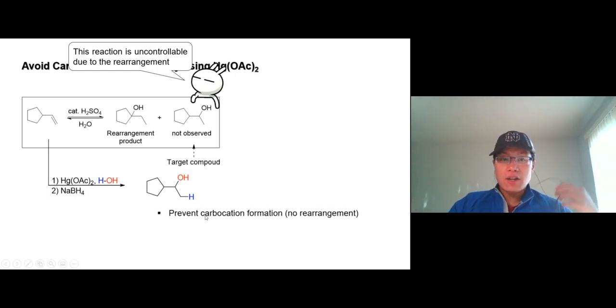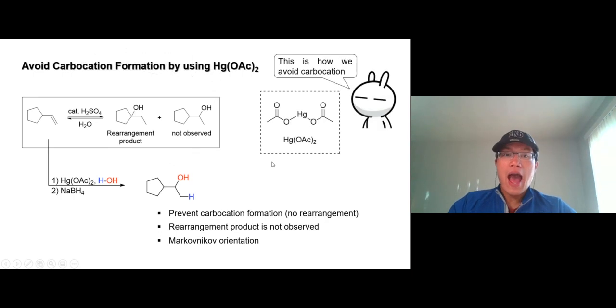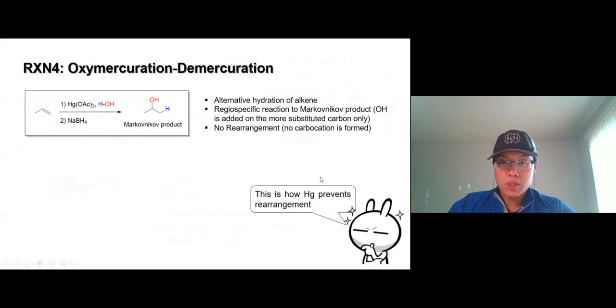The upside of using these reagents, the downside, of course, is they contain mercury, and mercury is toxic. We don't really like that. But the upside is it prevents carbocation, which also prevents rearrangement. So no rearrangement observed, and still goes Markovnikov, just like the acid catalyzed hydration. And why doesn't it form carbocation? No rearrangement? It's all because of this mercury diacetate. Let's take a look at what's going on.